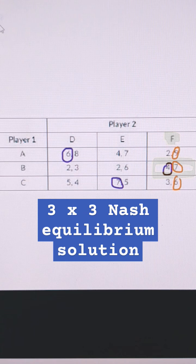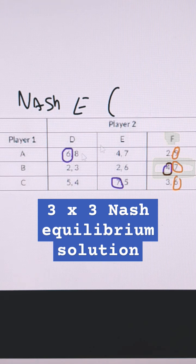The way we would write that is: the Nash equilibrium is where Player 1 chooses B and Player 2 chooses F.